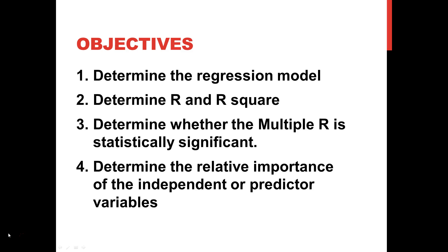Let's look at our objectives. Objective one is to determine the regression model. Objective two is to determine the multiple R and R-squared (capital R and capital R-squared). Objective three is to determine whether the multiple R is statistically significant. And objective four is to determine the relative importance of the independent or predictor variables.